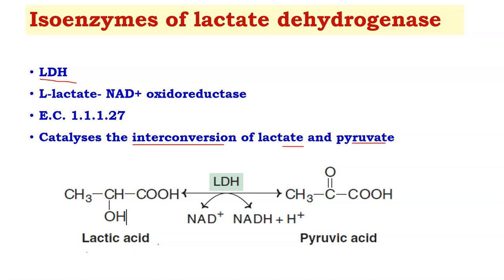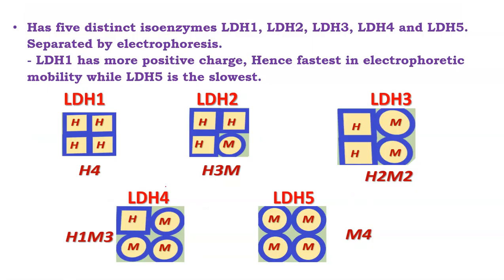LDH catalyzes a reversible reaction: it converts lactic acid to pyruvate acid, and also converts pyruvate acid back to lactic acid. Lactic acid on oxidation yields pyruvate acid, and pyruvate acid on reduction forms lactic acid. There are five distinct isoenzymes: LDH1, LDH2, LDH3, LDH4, and LDH5.